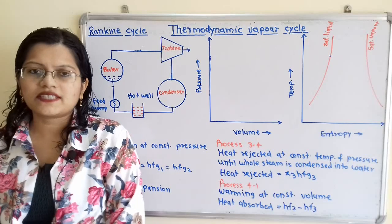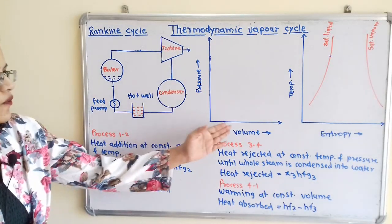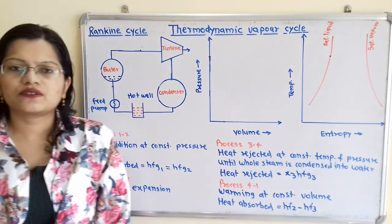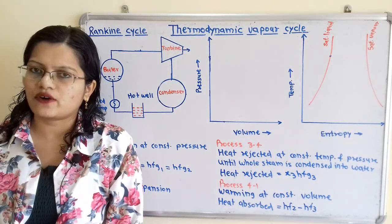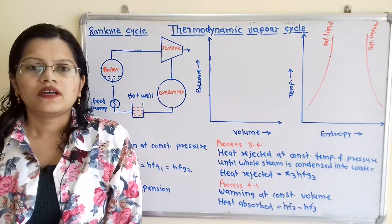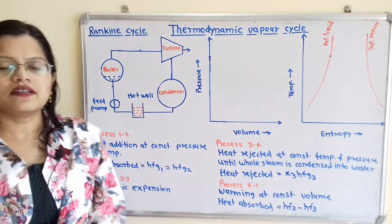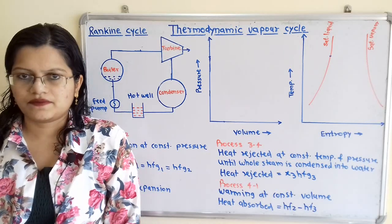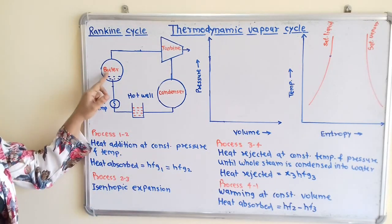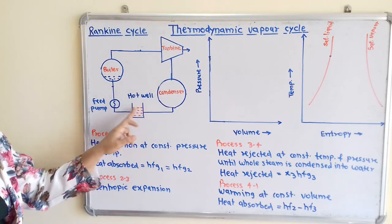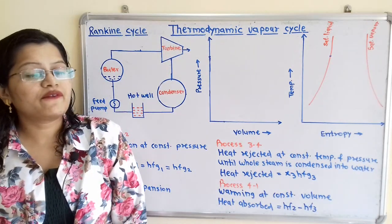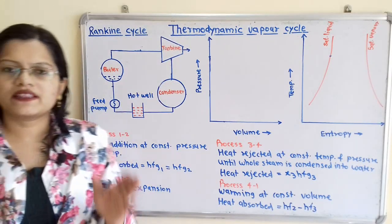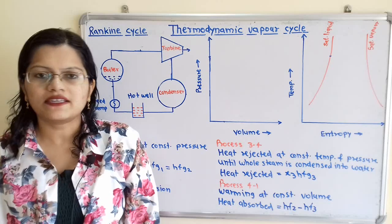Let us understand how to draw pressure-volume and temperature-entropy diagrams for the Rankine cycle, which is known as the modified Carnot cycle. This is a thermodynamic vapor cycle because steam is used as the working substance. If we observe this diagram, here is the boiler, turbine, condenser, and hotwell — these are the four main components through which the working substance passes when the different processes are taking place.